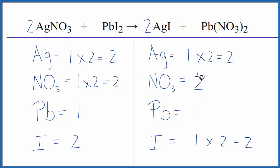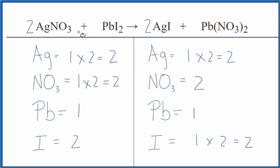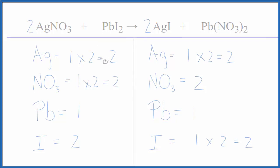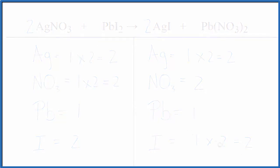This equation is balanced. So when you have something like NO₃, a polyatomic ion, just count it as 1 item and that'll make the balancing a lot easier. This is Dr. B — the balanced equation for AgNO₃ plus PbI₂. Thanks for watching.